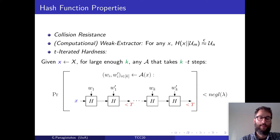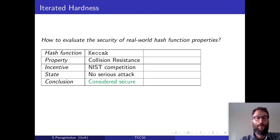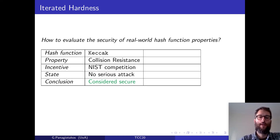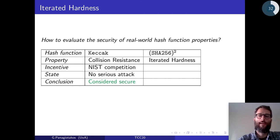Collision resistance and being a weak extractor are standard properties about hash functions. So in this work we also had to argue about what evidence we have about the iterated hardness property. To describe our approach, I'll first remind you of how we evaluate the security of real-world hash function properties. Take, for example, Keccak and collision resistance. The reason we believe that Keccak is collision resistant is because there was a competition run by NIST that incentivized researchers to break this property. Since no serious attack was found for the duration of this competition, we consider Keccak to be collision resistant. Now take the case of SHA-256 squared, the hash function used by Bitcoin, and iterated hardness.